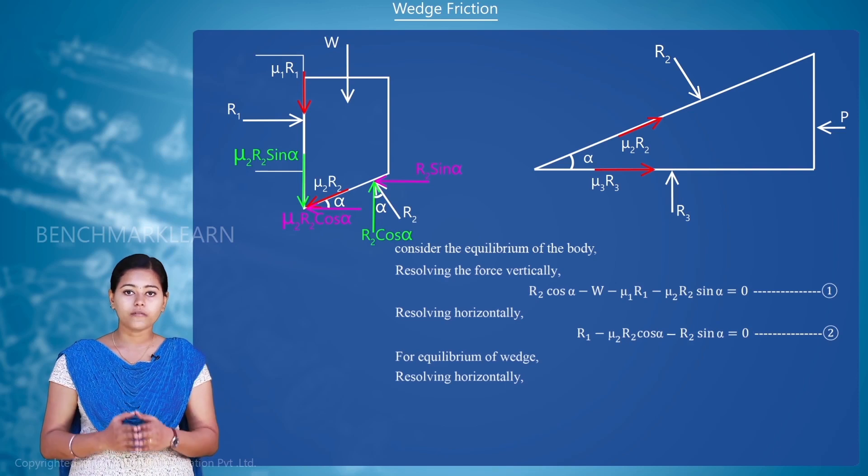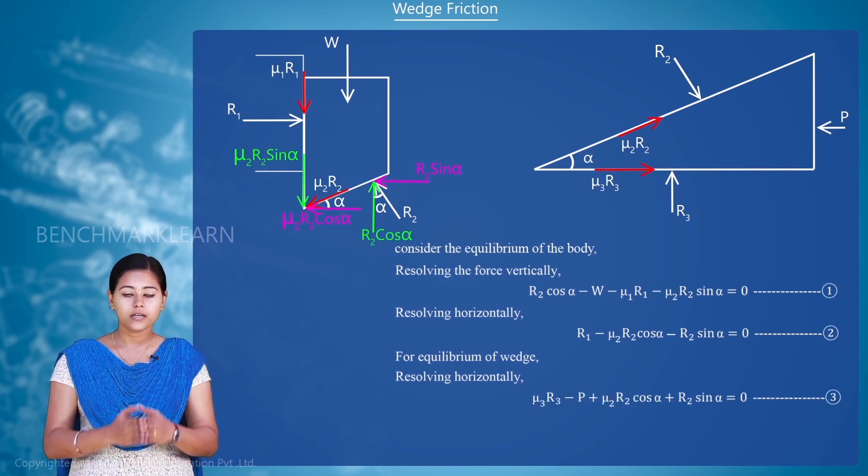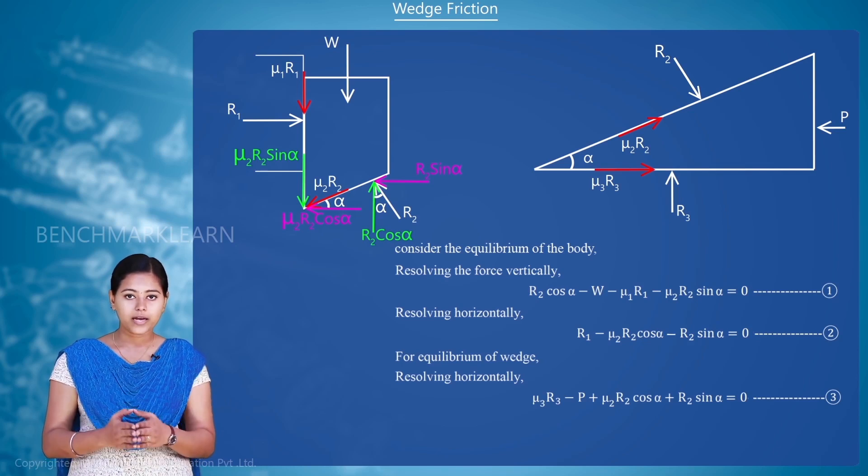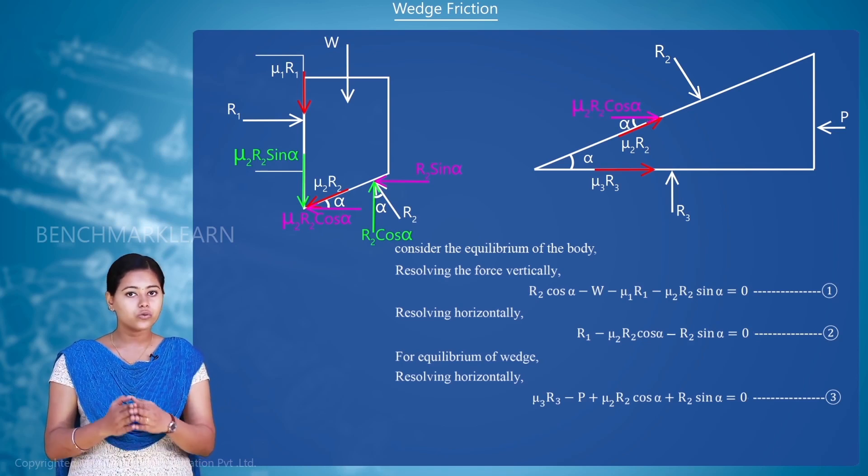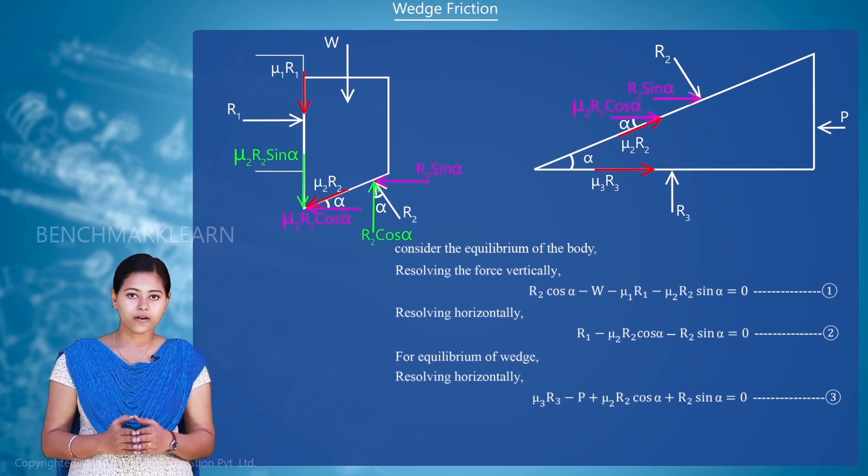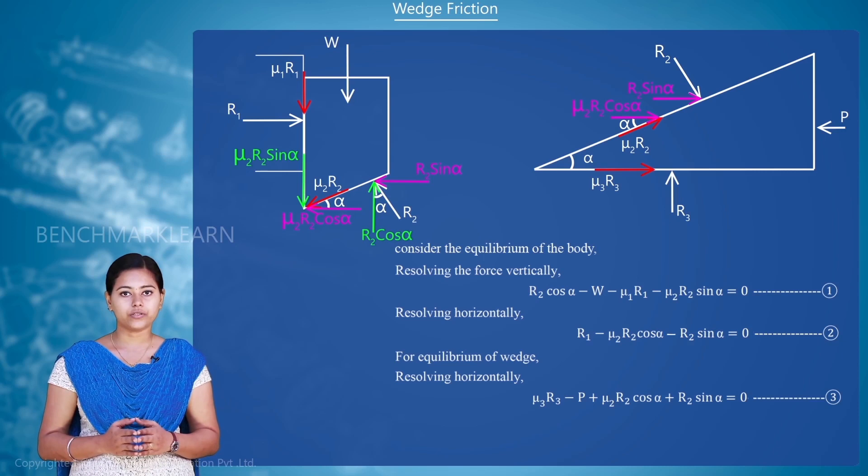Now, resolving vertically, we can write R3 minus R2 cos alpha plus mu2R2 sin alpha equal to 0. Mark it as third equation.